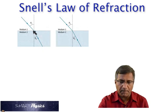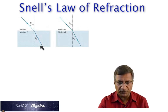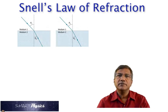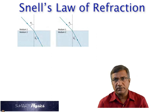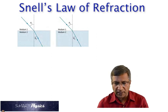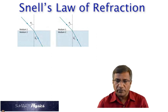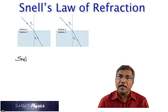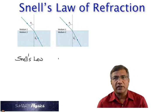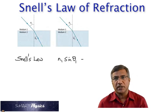So, we have the incident ray making an angle with the perpendicular. That is the angle of incidence. And the refracted ray makes an angle with the perpendicular, which is the angle of refraction. So, according to Snell's law, N1 sin theta1 is equal to N2 sin theta2.